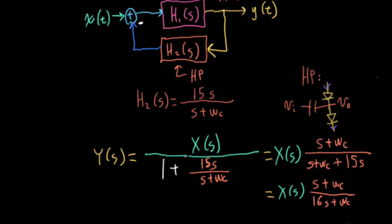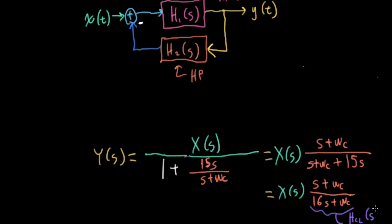Let me make some room here. So I could write X(S) s plus omega-c over 16s plus omega-c. So let me call this here big HCl, which is our closed loop transfer function. And if I were to take this and evaluate it at s equals j omega, and then evaluate at omega equals 0, I can get the value of the transfer function at dc, which is going to be omega-c over omega-c, which is going to be at 1. And if I do the same thing, but I let omega go to infinity, and I'm hand-waving this a bit, which is why I'm putting infinity in quotes.